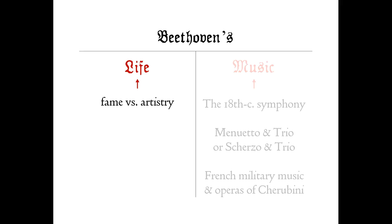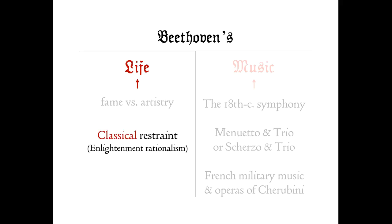Previously, we contrasted classical simplicity with the complexity of Baroque music that preceded it. Now we turn to the contrast between classical restraint and the emotional turmoil of the Sturm und Drang movement that foreshadowed the Romantic era of the 19th century, and the aesthetic contrast between the merely decoratively beautiful versus the awe-inspiring, overwhelming sublime.